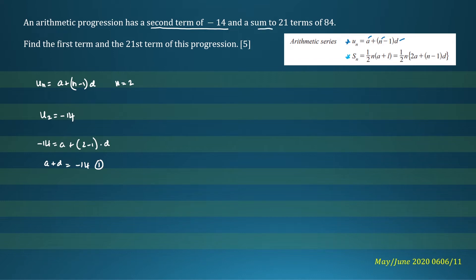In the second part of our question, the sum of the first 21 terms is 84. So let's write down our formula. S_n equals (n/2) times (2a plus (n minus 1)d). In this case, n will be equal to 21, so we can write S_21 equals 84.